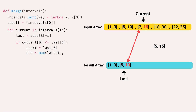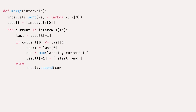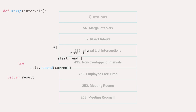If the end time of the last interval is greater than or equal to the current interval's start time, that indicates overlapping. The merged interval will have the start time of the last interval and the end time is the maximum of both end times. I add this merged interval to the results array. In the else clause, if the intervals are not merging, I simply add the current interval to the results array. Finally, I return the results array. Here is a list of questions you can practice — happy coding!